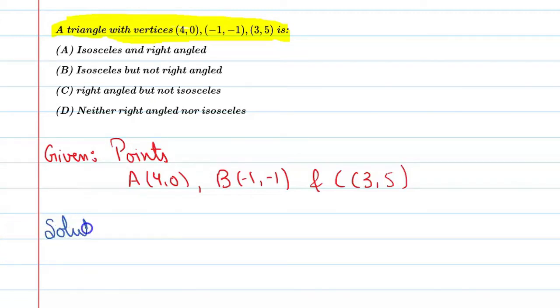To figure out the nature of this triangle, we need to find all three sides. If we have the lengths of all three sides, then we can determine what type of triangle it is.